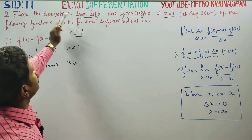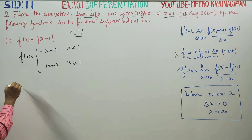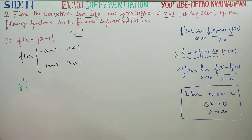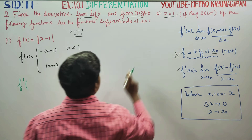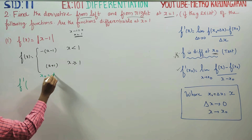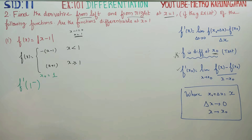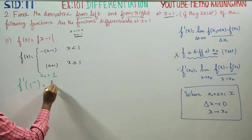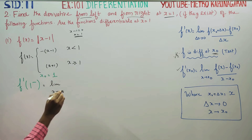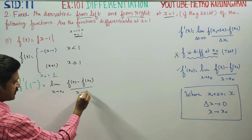First, find the left-hand derivative. The left-hand derivative at x = 1 means we approach from x = 1 minus. The formula for the left-hand derivative is: f'(x₀) = limit as x tends to x₀ minus of [f(x) − f(x₀)] / (x − x₀), where x₀ = 1.